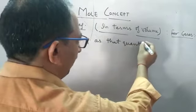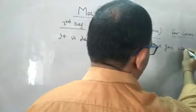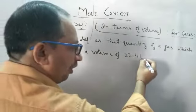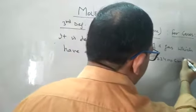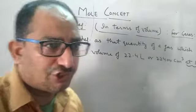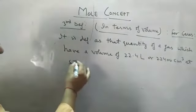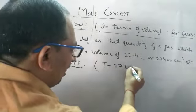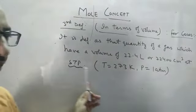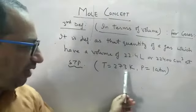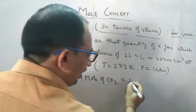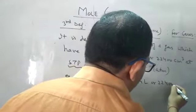So a mole is defined as that quantity of a gas which has a volume of 22.4 liters or 22,400 cm³ at STP. STP means a temperature of 273 Kelvin and a pressure of 1 atmosphere. This definition is valid only when this temperature and pressure condition holds. For example, one mole of CO₂ means 22.4 liters or 22,400 cm³.